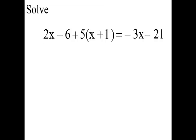Solve for x. We have 2x minus 6 plus 5 times x plus 1 equals minus 3x minus 21.